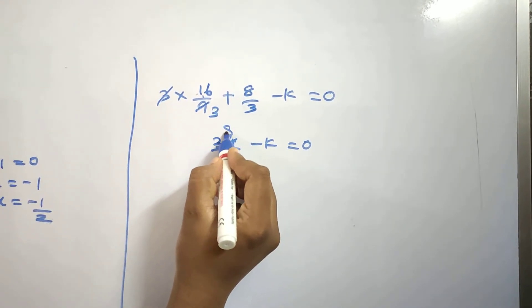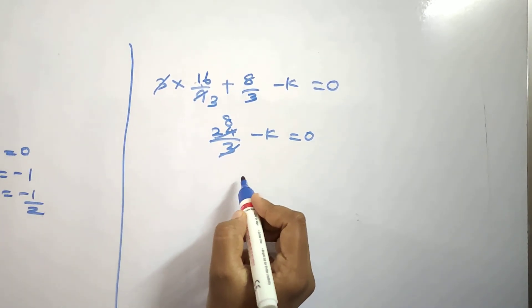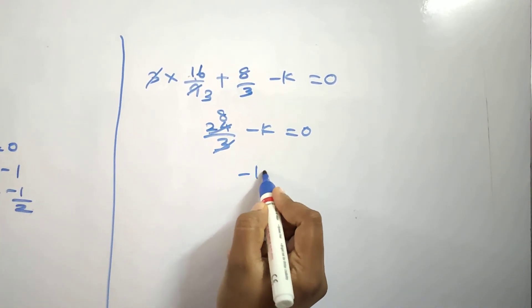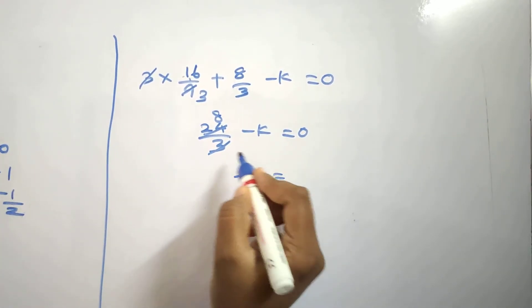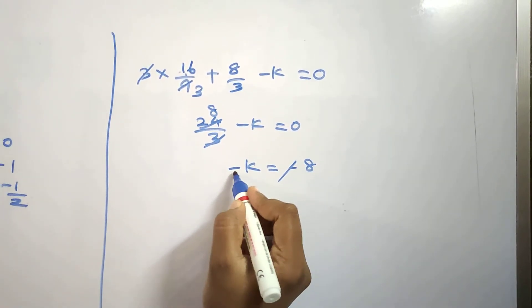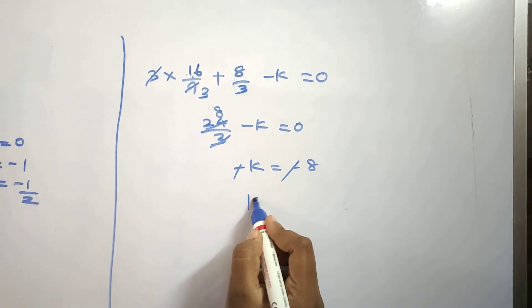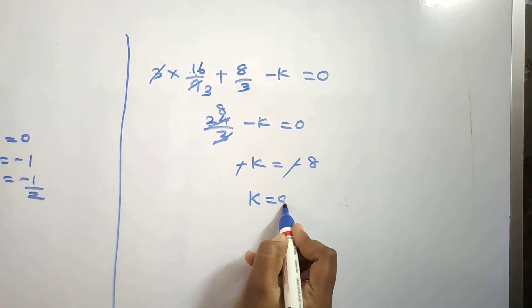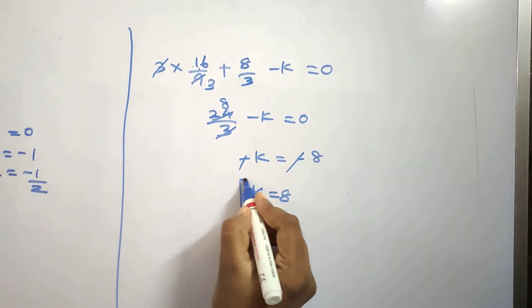24 by 3 simplifies to 8. So minus k equals minus 8; the two negatives cancel, giving k is equal to 8.